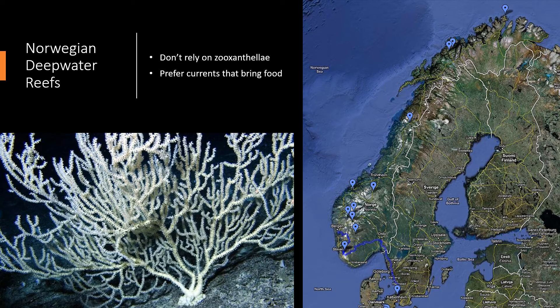Deepwater reefs can form in colder waters in the north, such as around Norway, and grow extremely slowly — only between 5 to 25 millimeters per year. Since they grow in deep, cold water, they can't rely on the mutualistic relationship with zooxanthellae. Instead, they have larger than average polyps — the branch-like living part of the coral — which they use to extract food from the water, preferring areas with a current. Deepwater reefs are also closely intertwined with glaciers, and some have alternating depositional layers of glacial deposits and limestone from reefs.